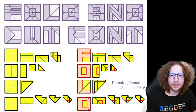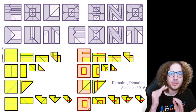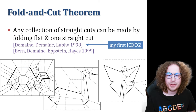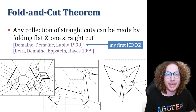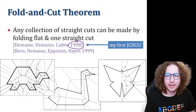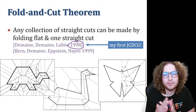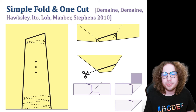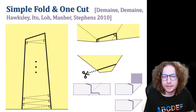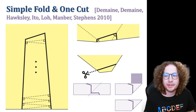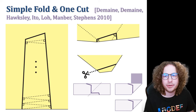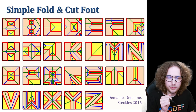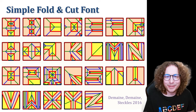The fold and cut font is what I showed at the very beginning: take a square piece of paper, fold along a sequence of simple folds, make one straight cut, and produce a letter of the alphabet. This refers to the fold-and-cut theorem, first published at JCDCG in 1998, that you can take a piece of paper, fold it flat, make one straight cut, and get any set of polygons you like. This font uses a different version — simple fold and cut, developed with Hiro Ito and others — where only simple folds are allowed, and the very first fold must be a line of symmetry.